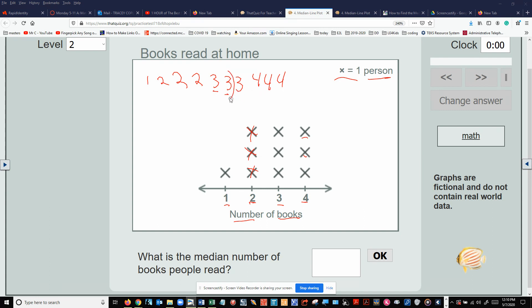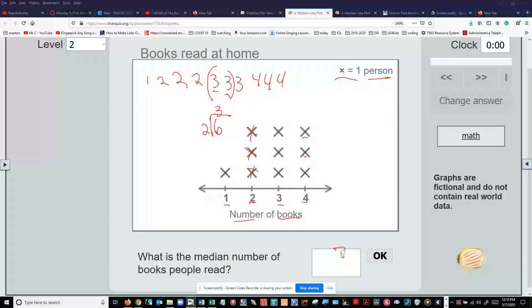If you will notice, we have two centers. Okay. What do we do with that? Well, we add those together and then divide it by two. Which means it's six divided by two. And we know that the median is going to be three.